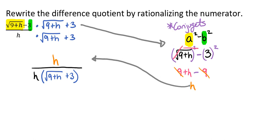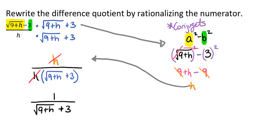Before we distribute that h on the denominator, we should notice something very interesting: our numerator and our denominator both have an h in common. So h divided by h is 1, so we'll be able to get rid of those, and have 1 over the square root of 9 plus h plus 3. And we are now finished — we have rewritten this by rationalizing the numerator.